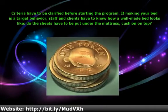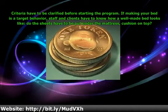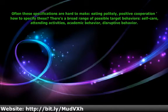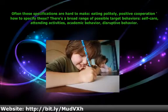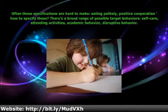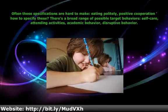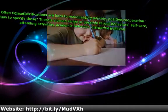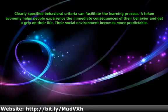Criteria have to be clarified before starting the program. If making your bed is a target behavior, staff and clients have to know how a well-made bed looks: do the sheets have to be put under the mattress, cushion on top? Often these specifications are hard to make — eating politely, positive cooperation — how to specify these? There is a broad range of possible target behaviors: self-care, attending activities, academic behavior, disruptive behavior. Clearly specified behavioral criteria can facilitate the learning process.